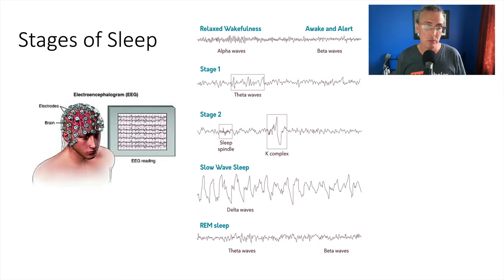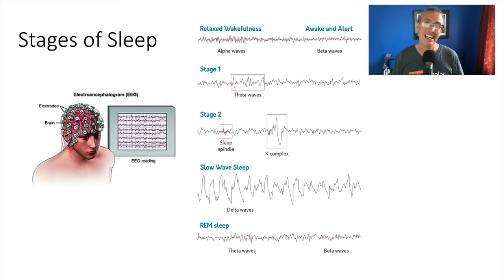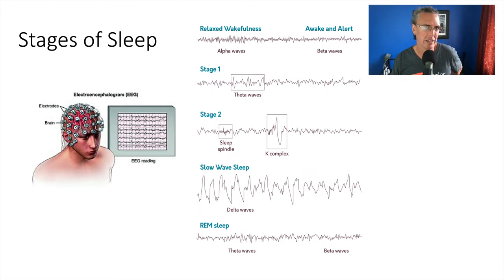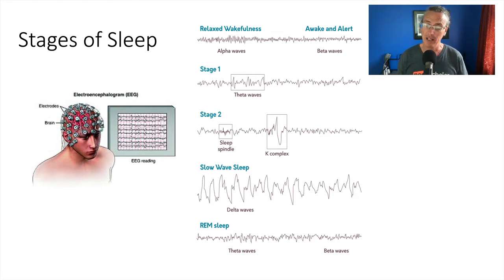When you see rapid eye movements happening, they are dreaming. If you wake them up at that moment, they should be able to tell you what they were just dreaming about. Interestingly, the REM sleep brain wave pattern looks quite a bit like awake and alert — not as high frequency, but close, with beta and theta waves mixed. The brain kind of wakes up from deep sleep but we don't actually wake up — we enter a dream state.